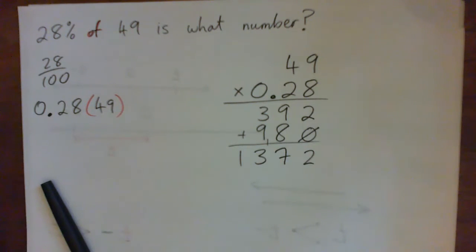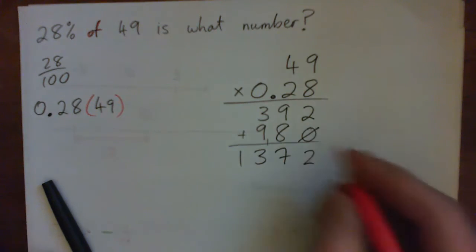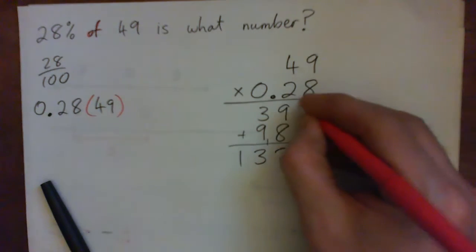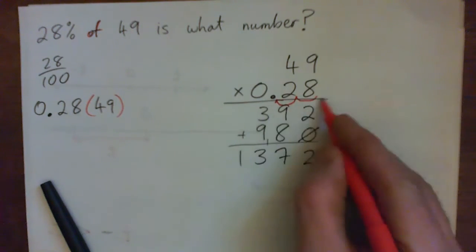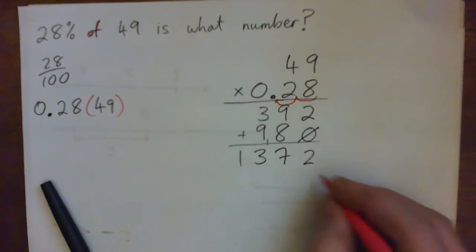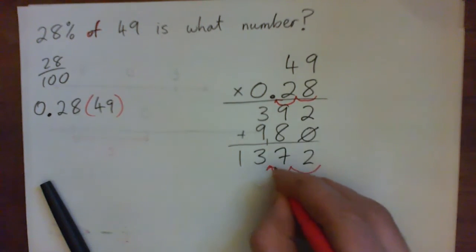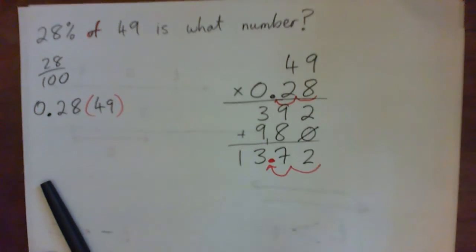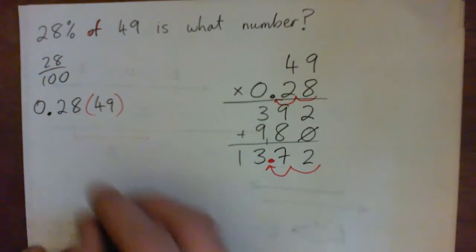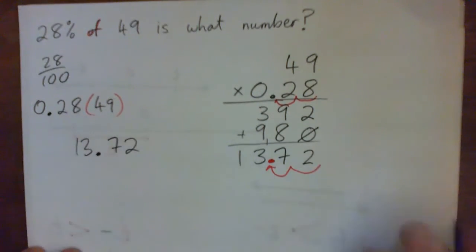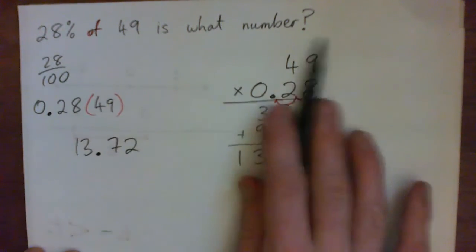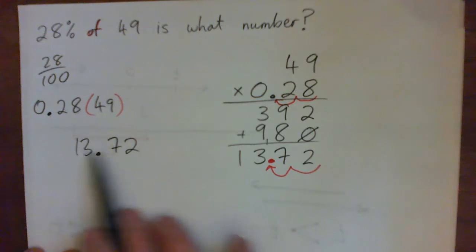And there's two decimal points in the question, so what should the answer look like? So there's two decimal places in the multiplication, 1, 2. It would be 13.72. Yeah. 13.72. Because that's all we're getting. 28% of 49 is what number? The number is 13.72.